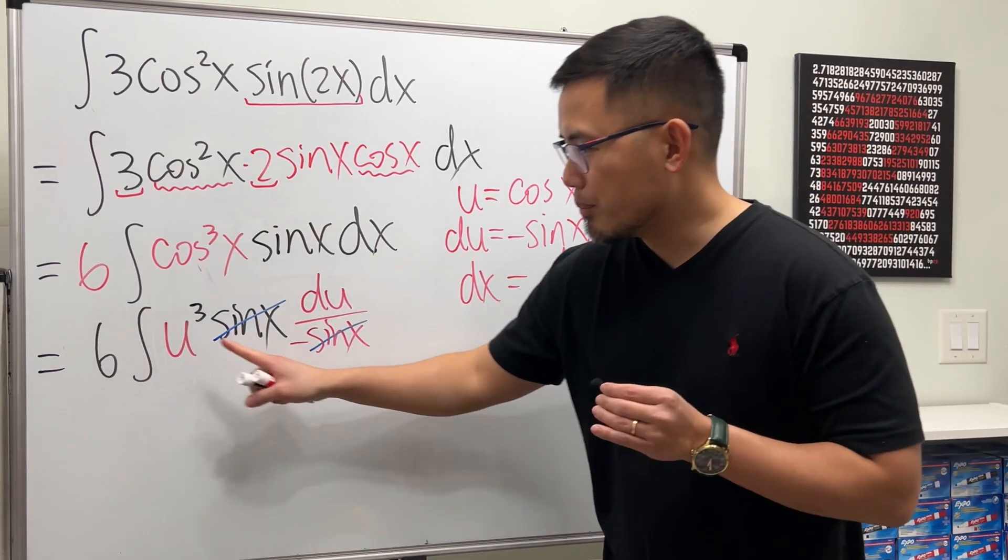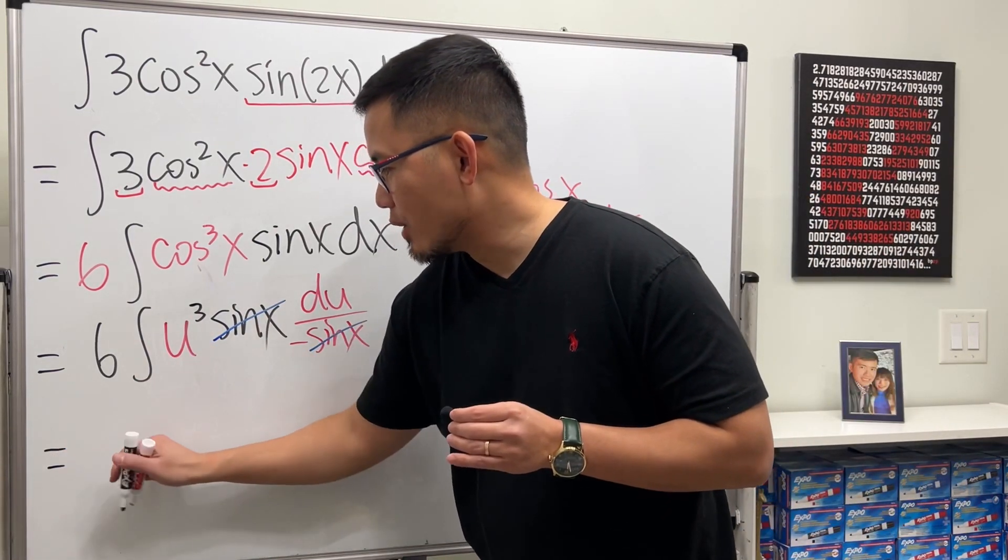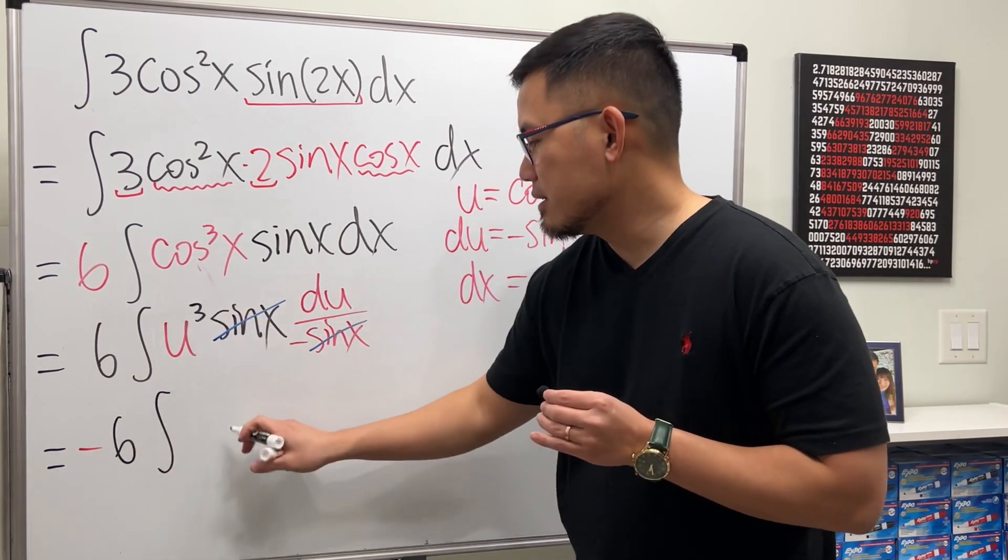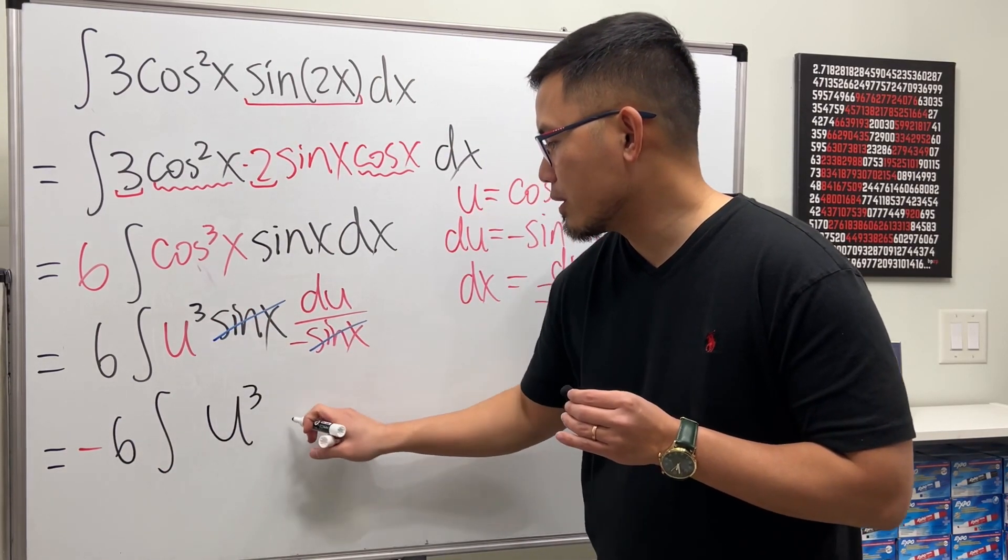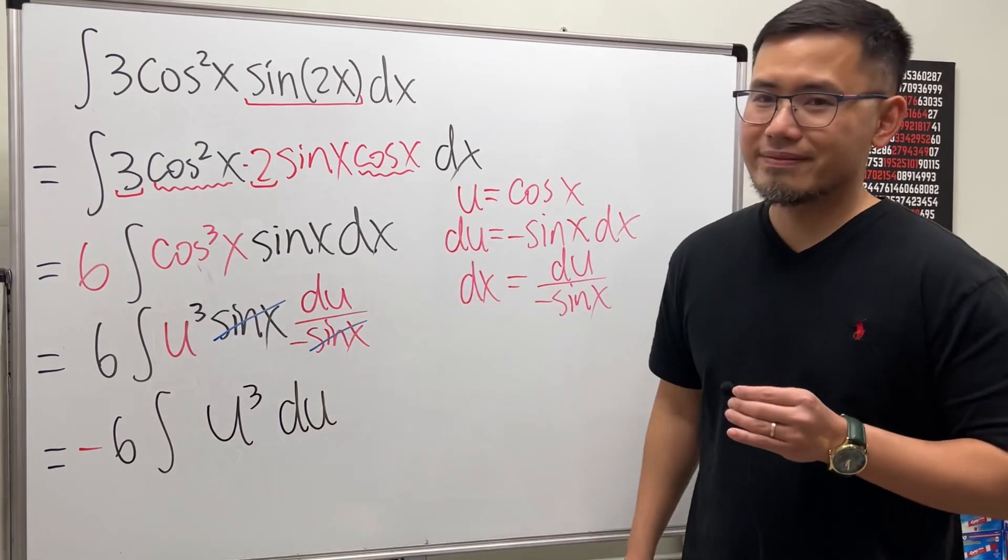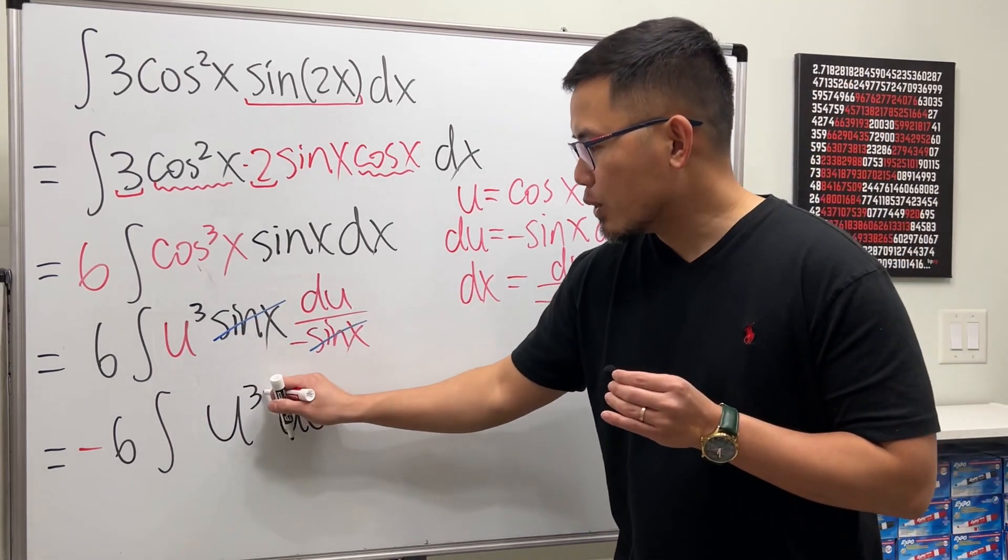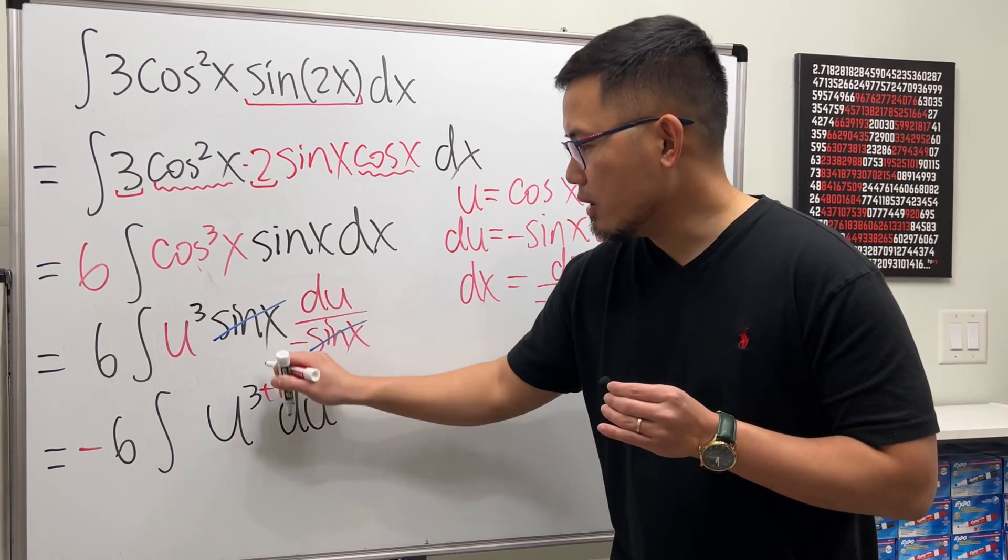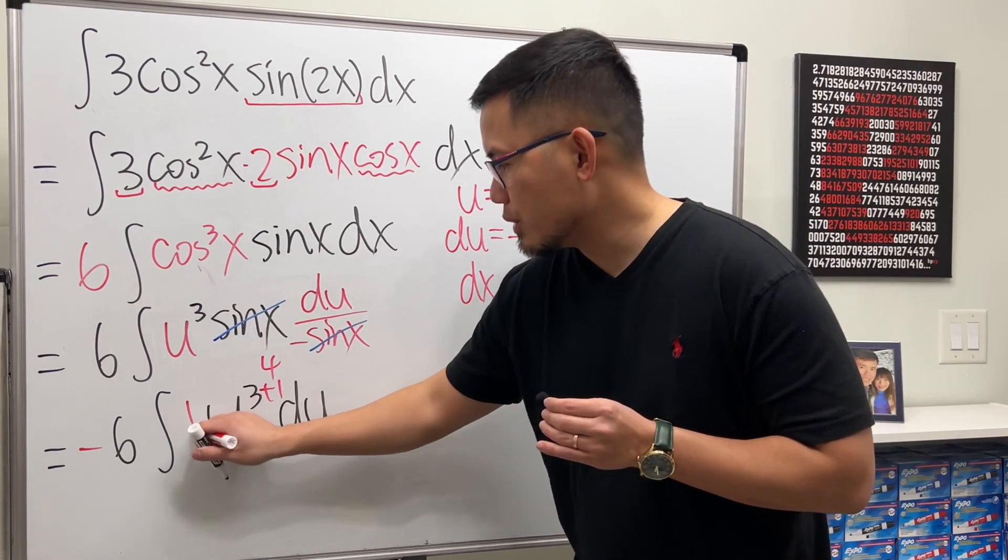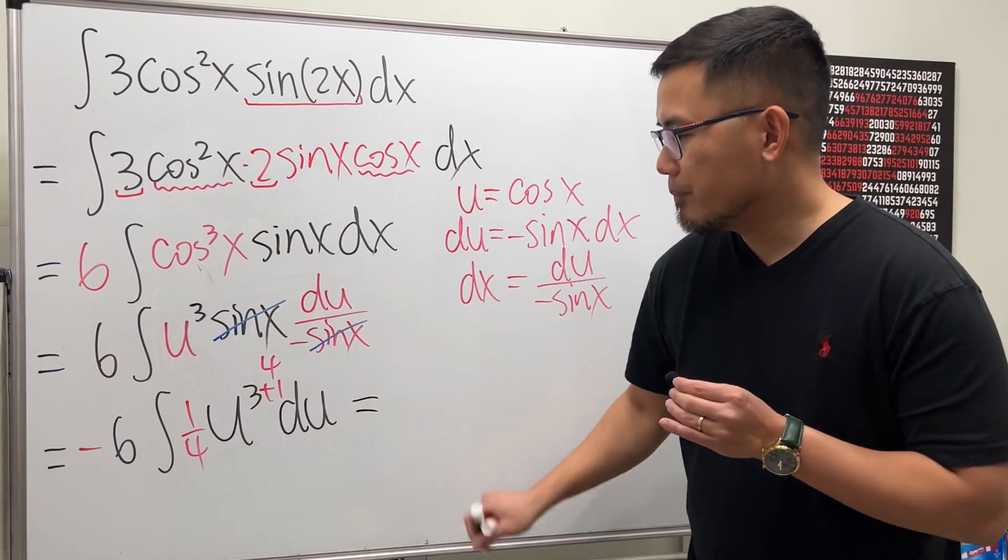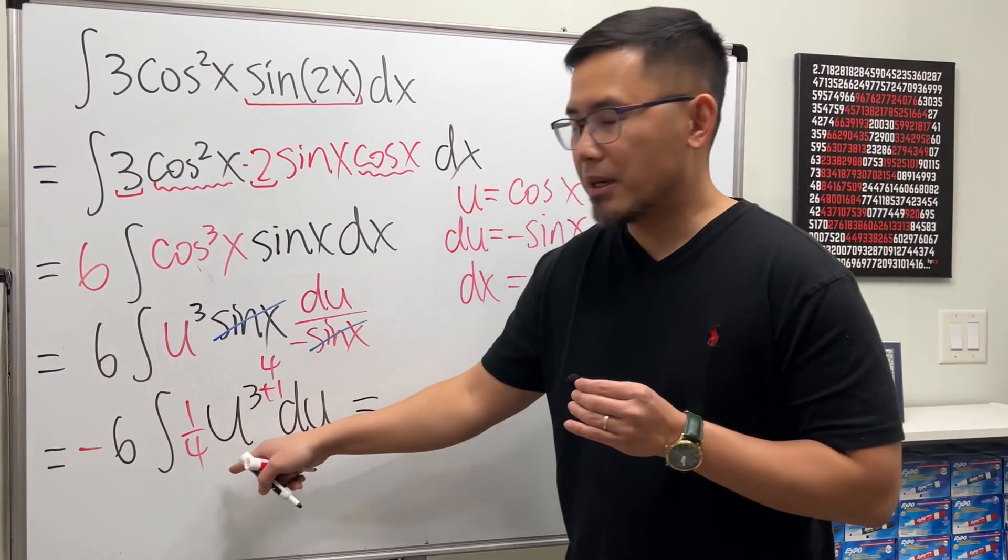We do have a negative though, put it on the outside. So negative six integral, and this is u to the third power du. Now we can just do the reverse power rule. Add one to the power, we get four, and divided by the new power, so we have one over four.